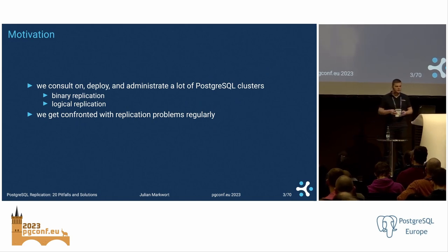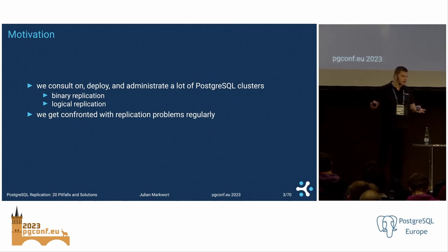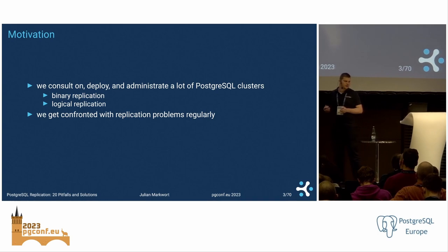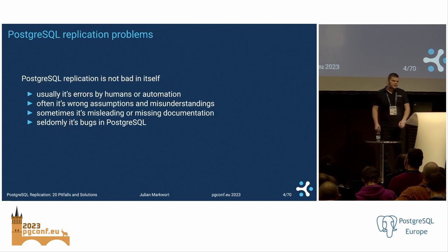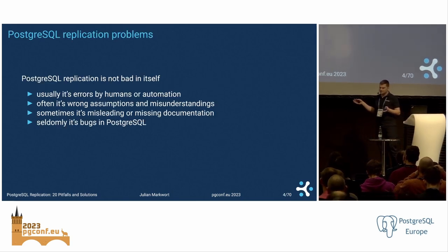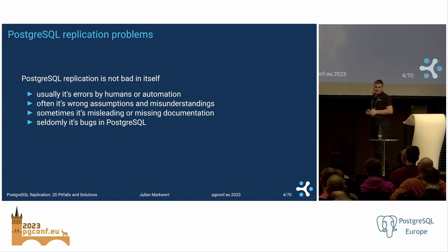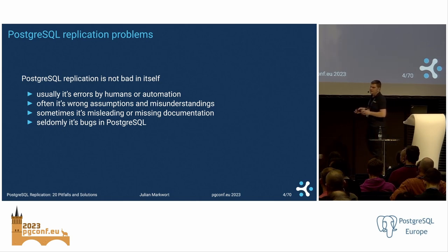The motivation for this talk is that we consult on, deploy, and administrate a lot of PostgreSQL clusters, replicating clusters, so that includes binary replication or logical replication. We get confronted with a lot of replication problems on a regular basis through the support team. PostgreSQL is not that bad as it might sound — we end up with a lot of problems because a lot of people are running replication. Usually it's errors by humans or automation, often wrong assumptions or misunderstandings, sometimes misleading or missing documentation, and very seldomly a bug in PostgreSQL itself.